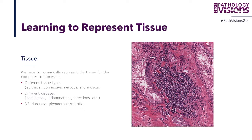That's what we call in computer science NP-hardness — a fancy word for saying this is basically impossible. We cannot represent all types of tissues in a computer because there is an unbelievably large number of possible combinations and variety of tissue.